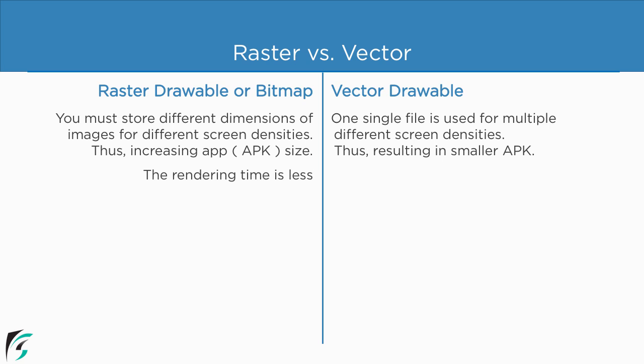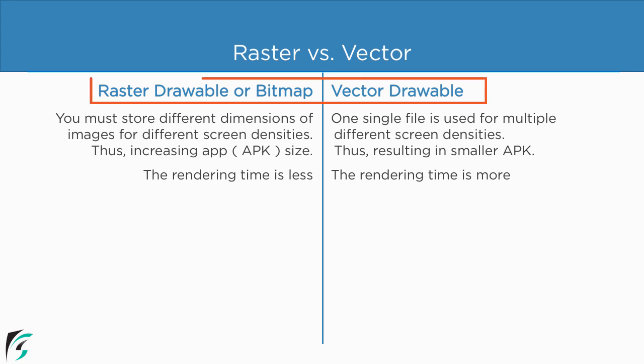Raster drawables take lesser time to render on the screen, but vector drawables take more time to render. So looking at all of these points, we can say that raster drawables and vector drawables each have their own pros and cons. The question arises: when should we use raster drawables and when should we use vector drawables?